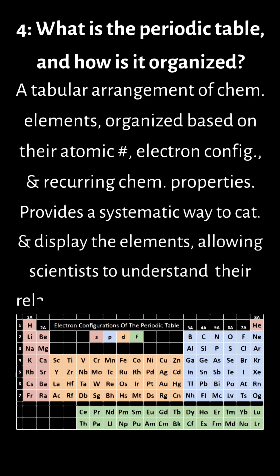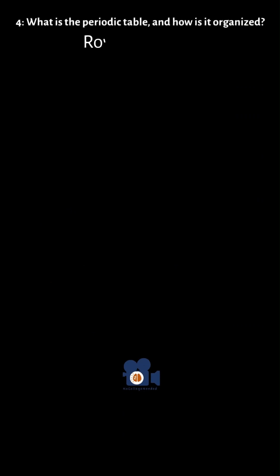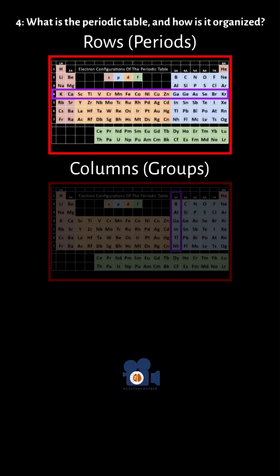It provides a systematic way to categorize and display the elements, allowing scientists to understand their relationship and predict their behaviors. The periodic table is organized by rows called periods, columns called groups, and blocks.